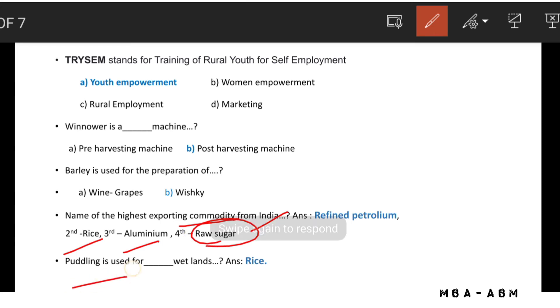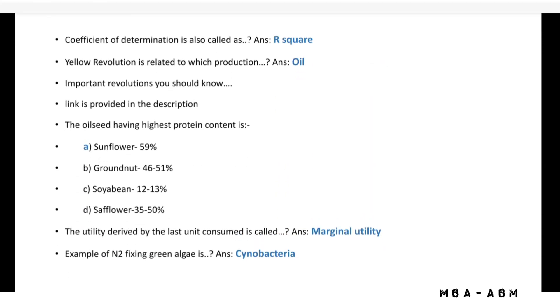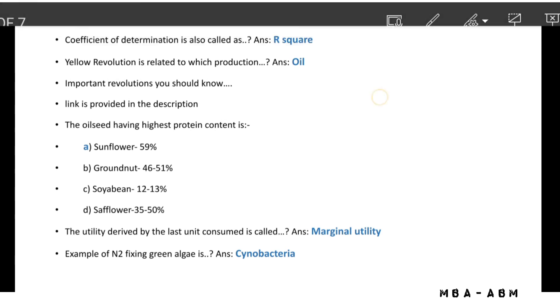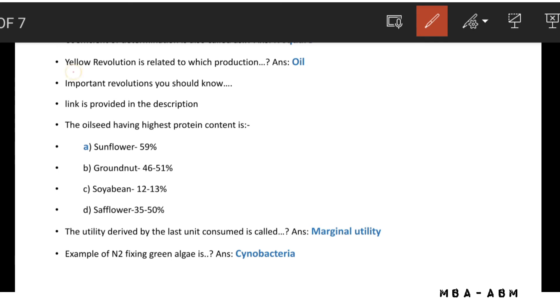Puddling is used for rice wetlands. The coefficient of determination is also called R-squared. Dollar evaluation is related to oil production.